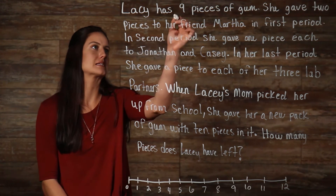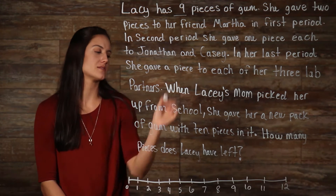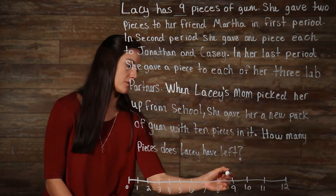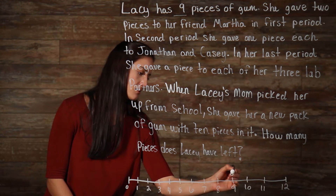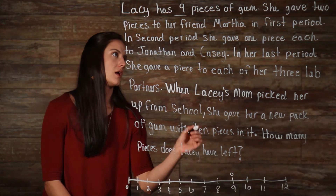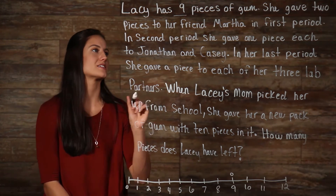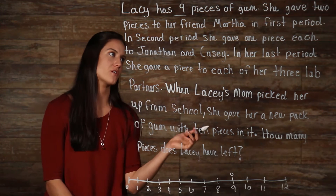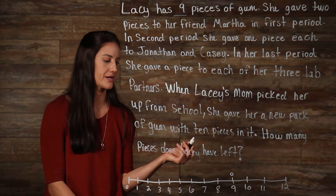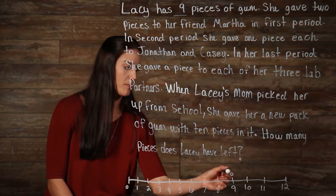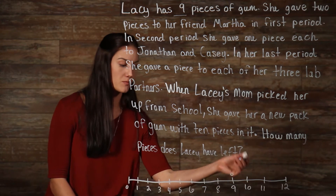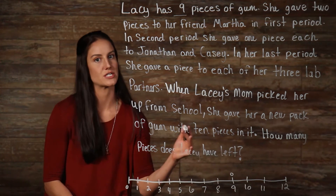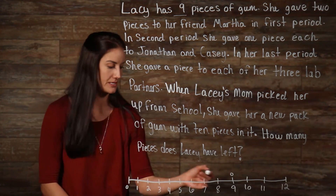So we start — Lacey has nine pieces of gum, so we are right here at nine. And then she gave two pieces to her friend Martha in first period. So we go back on our number line — she gave them away, so now she is missing two pieces.